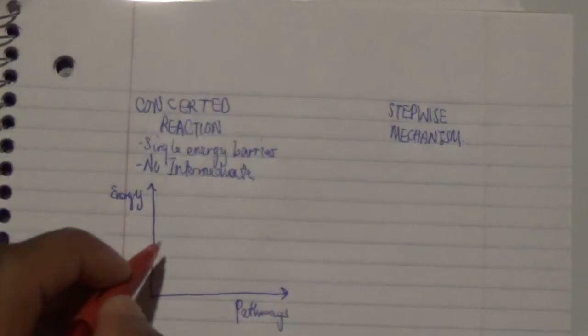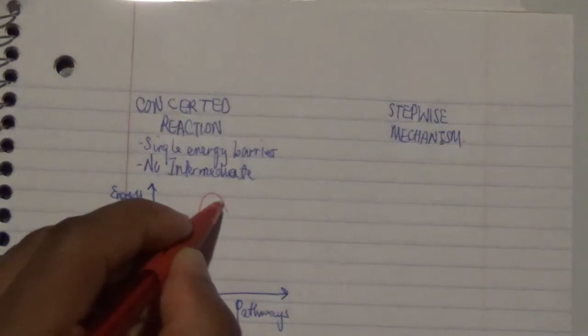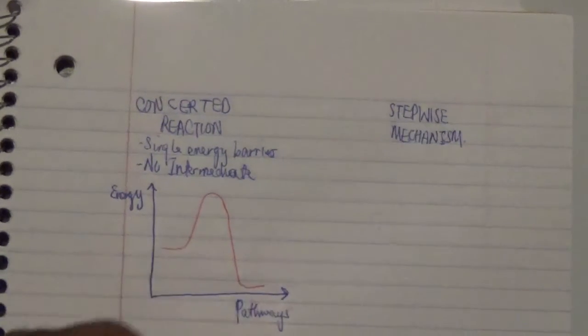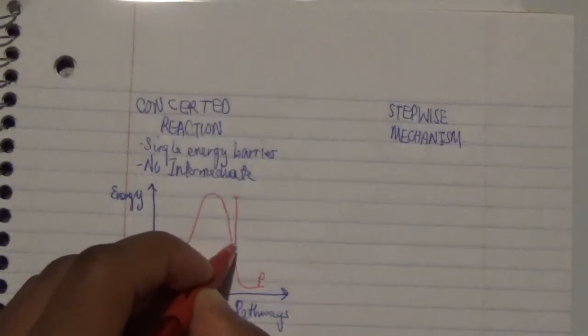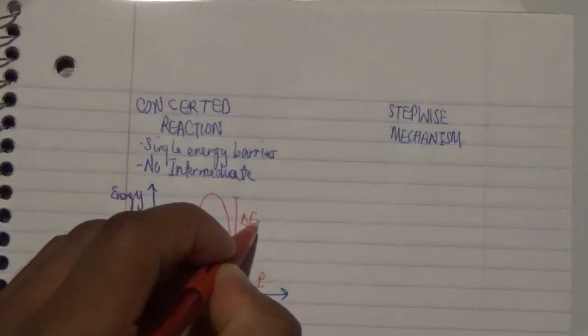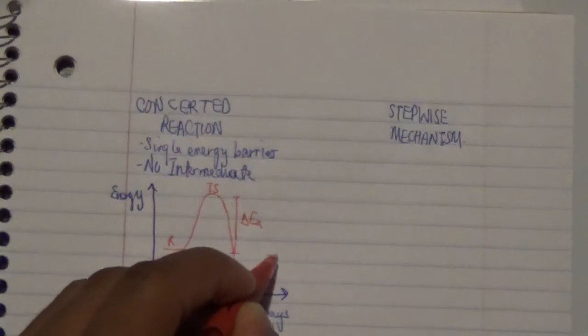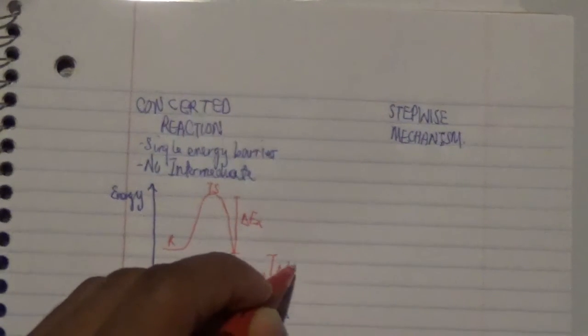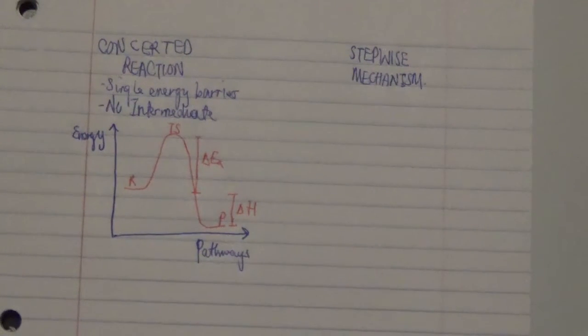Drawing the energy diagram: we have our reactants at this position, and it requires a large amount of energy to reach the transition state. Once it transforms, it comes down to form the final product. The activation energy is shown here, the transition state is labeled TS, and the energy difference between reactant and product is indicated.